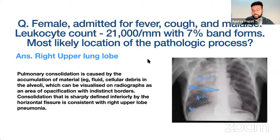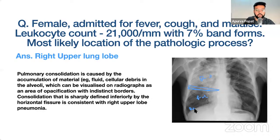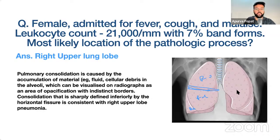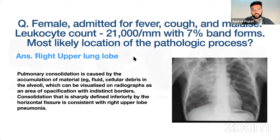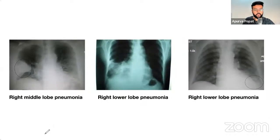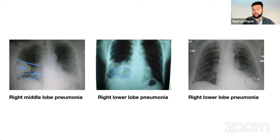On chest X-ray, above the horizontal fissure is the right upper lobe; between horizontal and oblique fissures is the right middle lobe; below is the right lower lobe. The left lung has only two lobes — left upper and left lower. This is how you identify which lobe of the lung is involved on imaging.